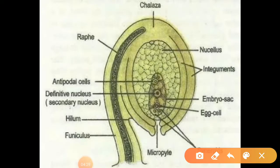Next we can learn the structure of an anatropous ovule. What is an anatropous ovule? The ovule turns at a 180-degree angle, thus it is an inverted ovule. Micropyle lies close to hilum. This type of ovule we can call as anatropous ovule.